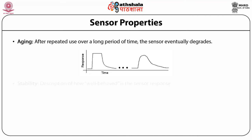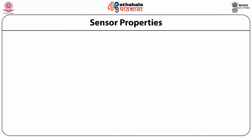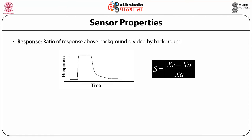Another property is stability: this describes how well-behaved the sensor response is. In the figure we can see a stable sensor whose response is very stable and flat. In the case of an unstable sensor, the response is a very noisy graph. The next property is the response, which is the ratio of the response above background divided by the background.